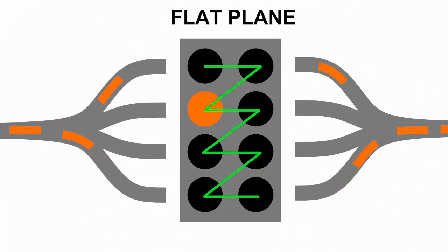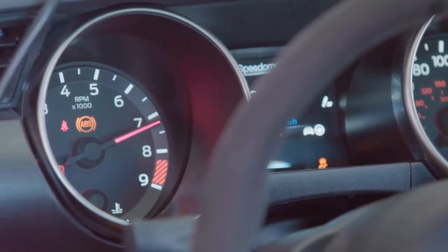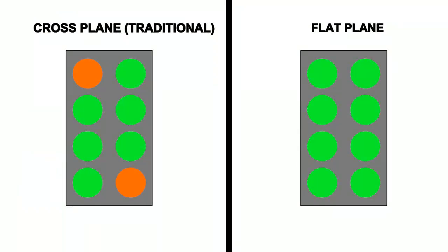As engine speeds increase, this breathing efficiency becomes more and more important, which is one of the reasons why flat plane V8s tend to rev significantly higher than their cross plane counterparts. It's not the only reason, however.